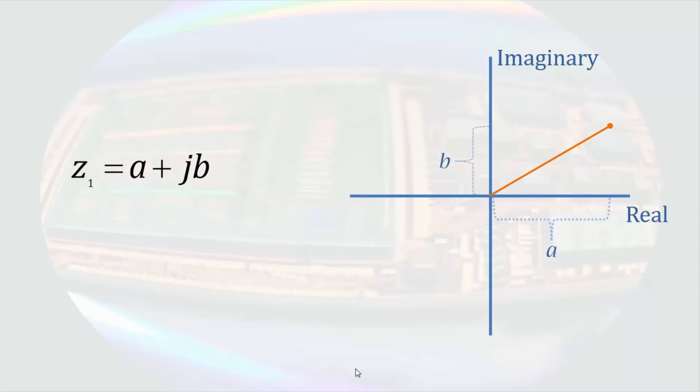When an imaginary number is drawn in this fashion, we can see that it can alternatively be expressed in terms of a line showing the distance from the origin and the angle that line would make with respect to the real axis. We would write the complex number in this form as r times the exponential function raised to the imaginary number times phi.